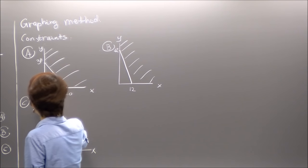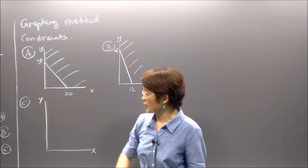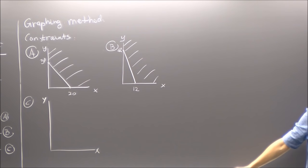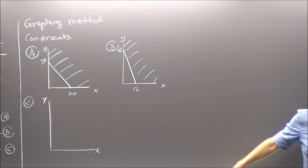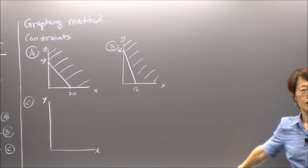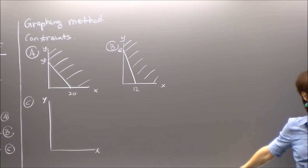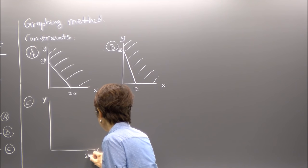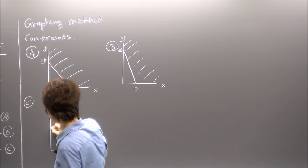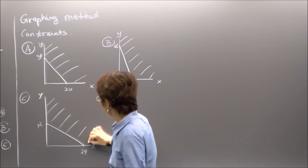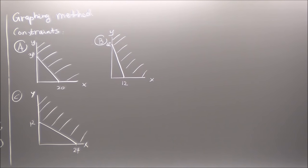For constraint C, the x-intercept is 72/3. Do you play the card game called Make 24? I played so much in my childhood that I'm very sensitive to any number that ends in 24. It's 24. And the y-intercept is 72/6, which is 12. Connect these two and I have this region.